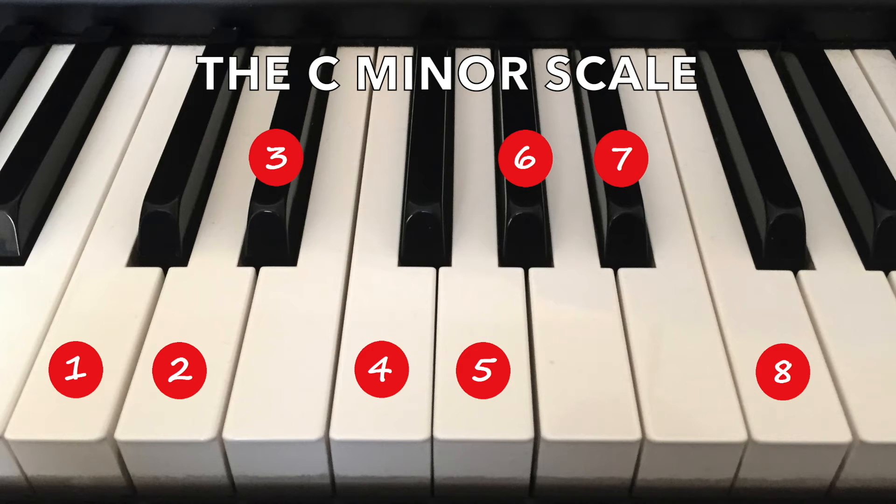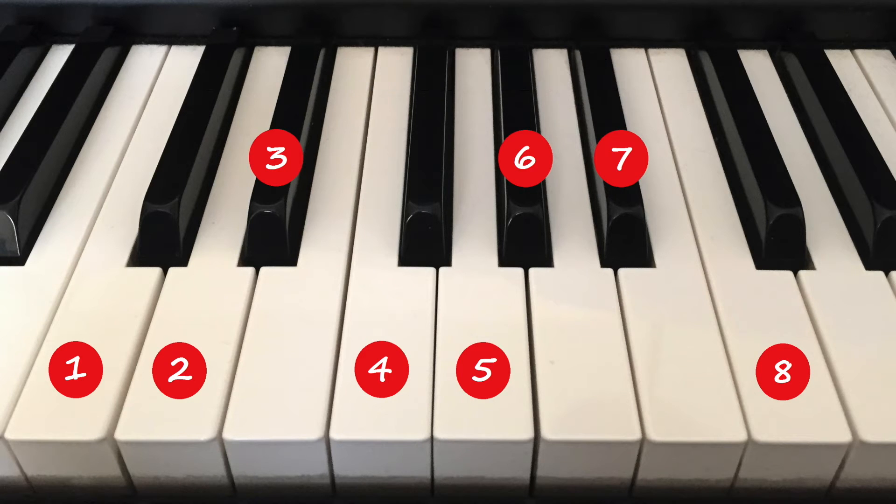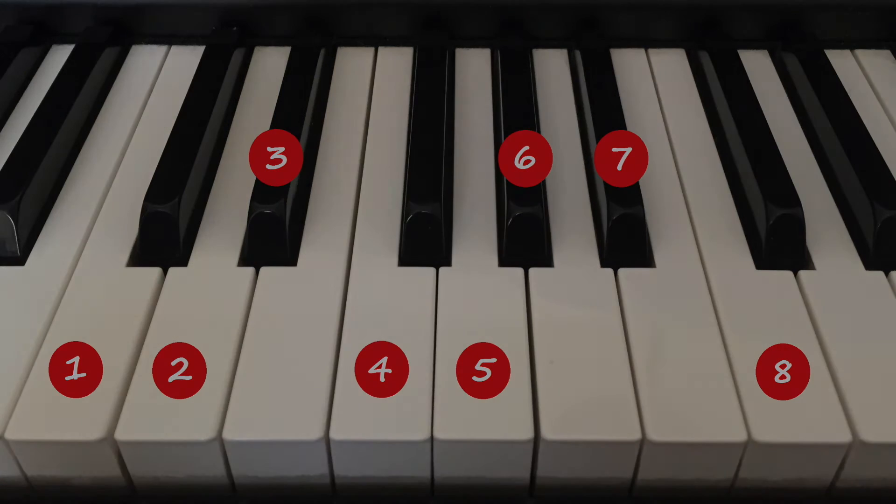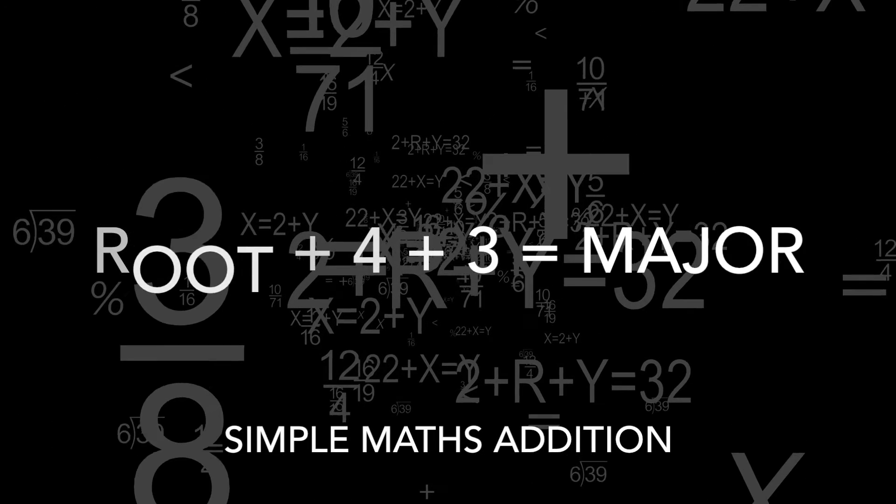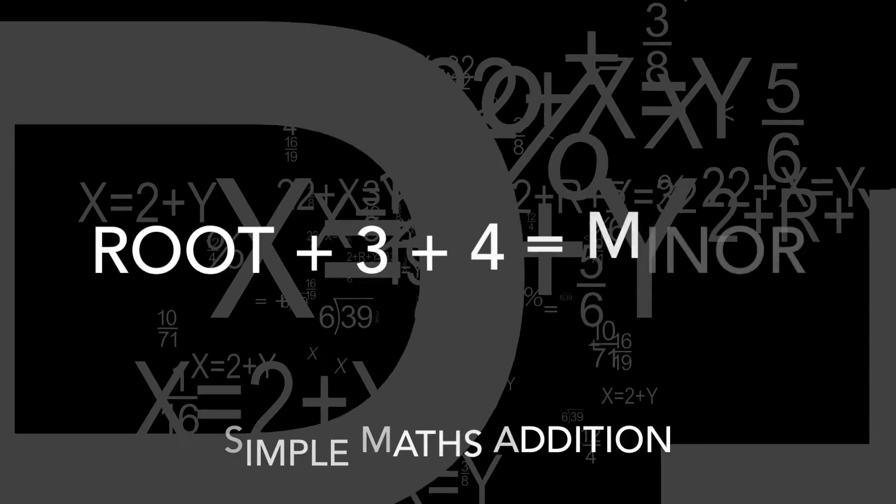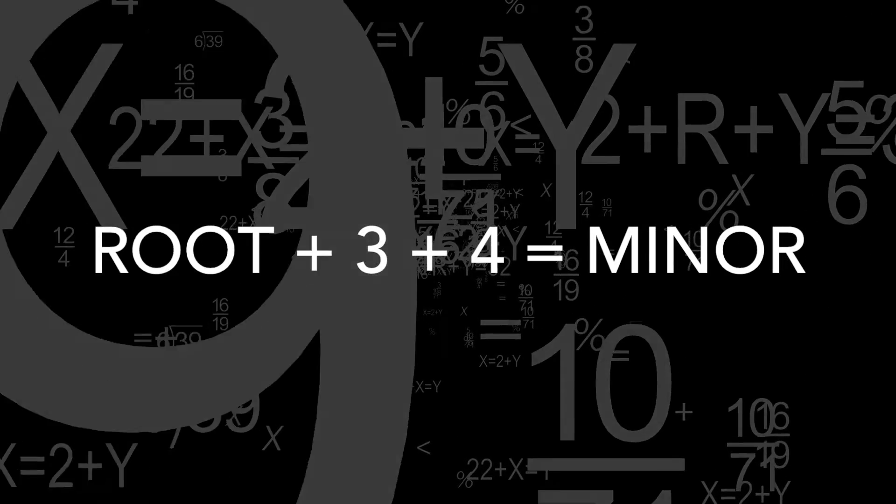However, there are shortcut formulae which can easily create some pretty advanced sounding chords without having to know the scales or the key signature. We are now delving into simple math, using just the numbers four and three. Each combination will create either a major or minor triad.